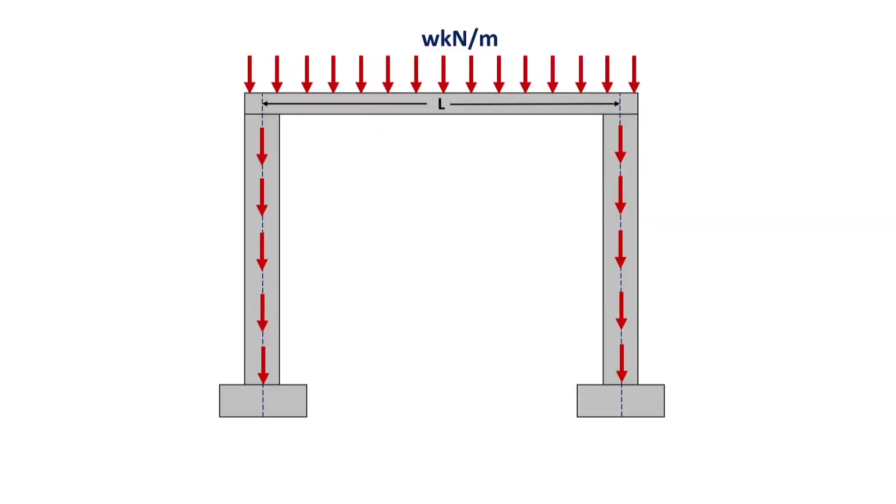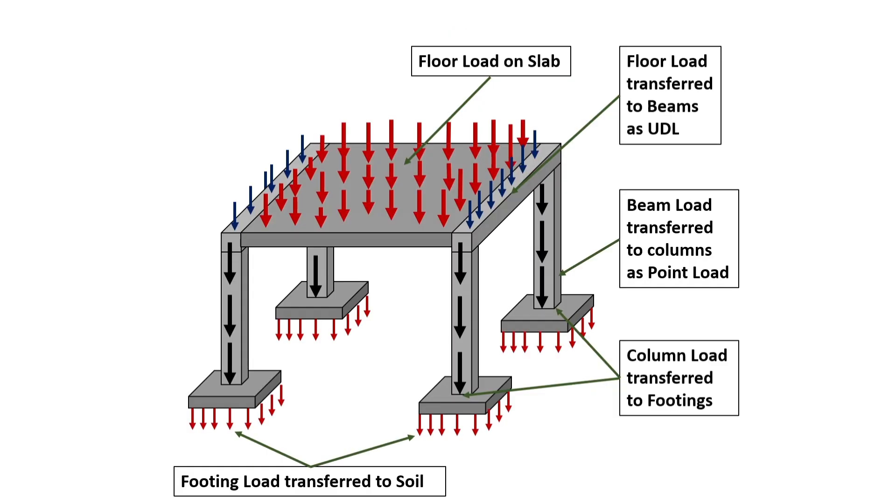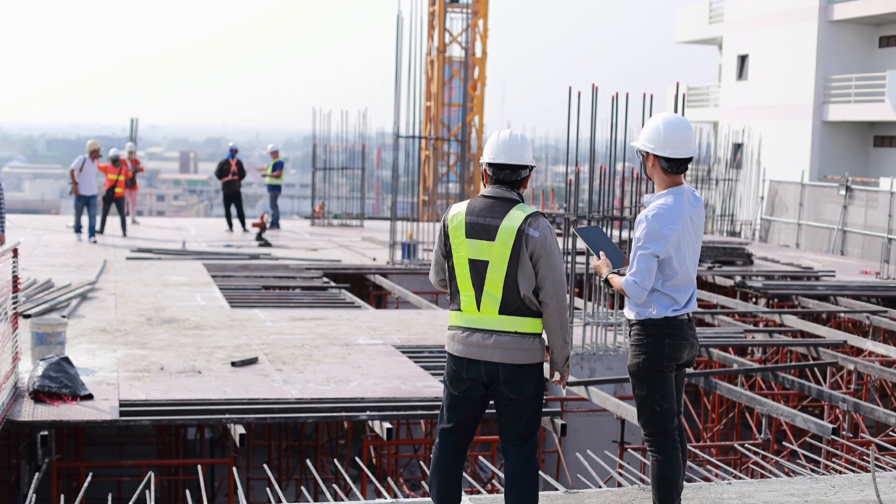These loads are transferred from one element to another through stress and deformation in the material until they reach the foundation where they are transferred to the ground. The load transfer in a framed structure starts with the slabs which are flat horizontal surfaces made with a combination of concrete and steel.